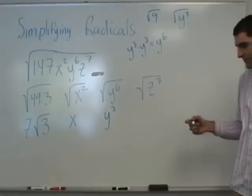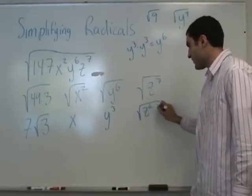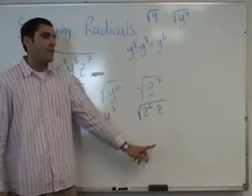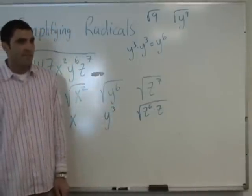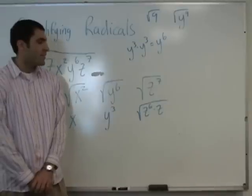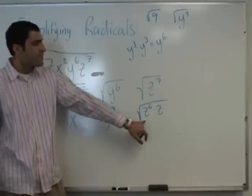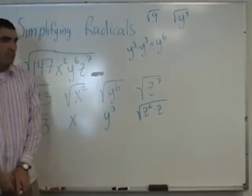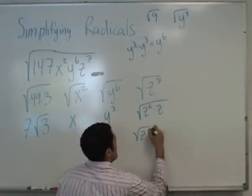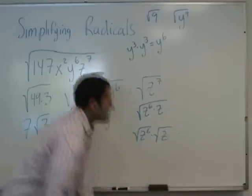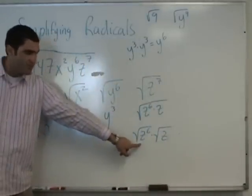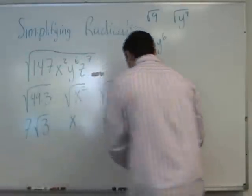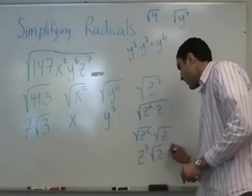Z to the 6 and z. Why not z to the 4th? If we did z to the 4 times z to the 3, we would again have to split z to the 3 — so we'd have to do it in two steps. This is the simplest form, the highest even power. So what is the square root of z to the 6, just like y to the 6? Z cubed. So: z to the 6 times z. The square root of z to the 6 is z cubed. So this is z cubed times square root of z.